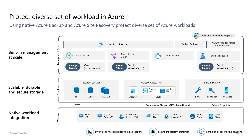We have the snapshot tier, used when we snapshot the databases, and the standard tier where we store regular backups. This standard tier is completely isolated from customer tenants, and we provide additional security elements on top of that. We also introduce an archival tier for long-term retention. For availability, we have LRS, ZRS, and RAGRS. We also provide built-in security with RBAC, encryption with customer-managed keys, soft delete, multi-user authorization (MUA), and immutability.